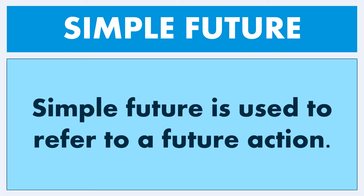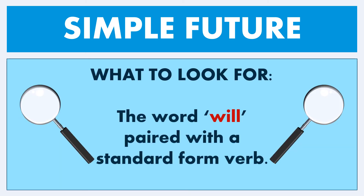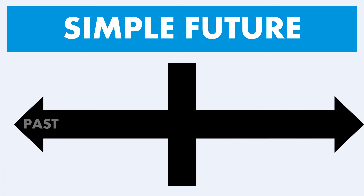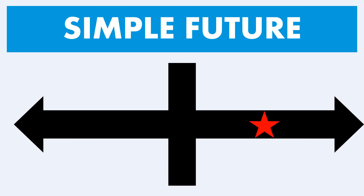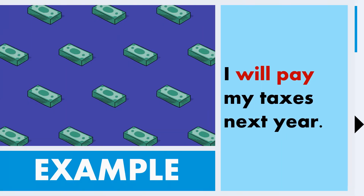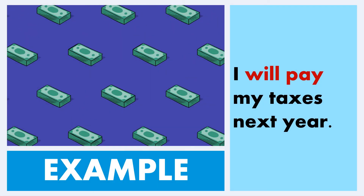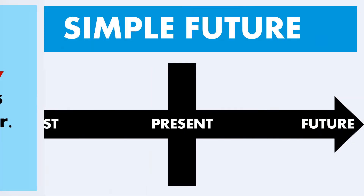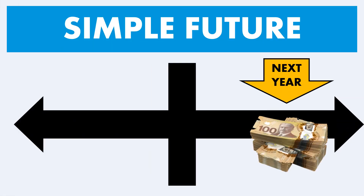Simple future tense is used to refer to a future action. What to look for: the word 'will' paired with the standard form verb. On the timeline, we have past, present, and future, and the future tense is simply a singular event that takes place in the future, illustrated by a red star. For example: 'I will pay my taxes next year.' On the timeline, we have all that tax money coming out next year — something we will do in the future.